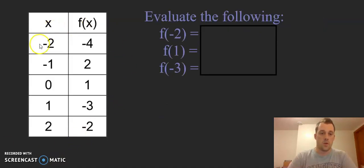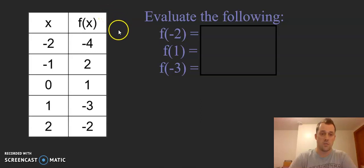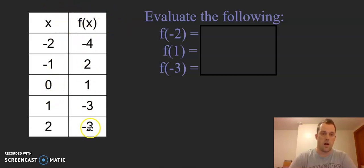So if we have this table here, we can think of f of x as our y values. We have our input here and our output here.